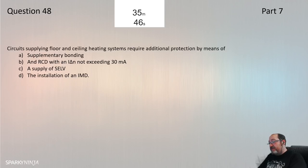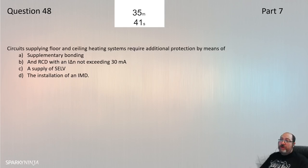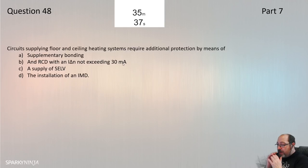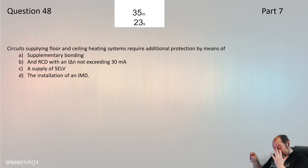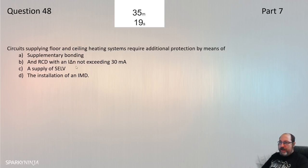Question 48: Circuits supplying floor and ceiling heating systems — regulation 753 — require additional protection by means of... Thinking RCD immediately. Regulation 753.415.1 confirms: additional protection by RCDs to 415.1.1. Question 48 is B, from 753.415.1.